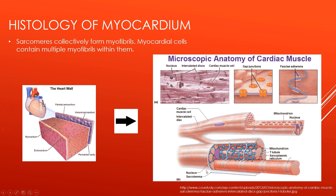The sarcolemma has invaginations called T-tubules. The T-tubule comes directly from the sarcolemma but cuts inside the cell. The reason it does this is that by invaginating inside the cell, it can form connections with all the myofibrils, sarcomeres, and sarcoplasmic reticulum much more easily. Without T-tubules, a single straight sarcolemma lining would not have good communication with the myofibrils within the cell — that's why T-tubules are needed.